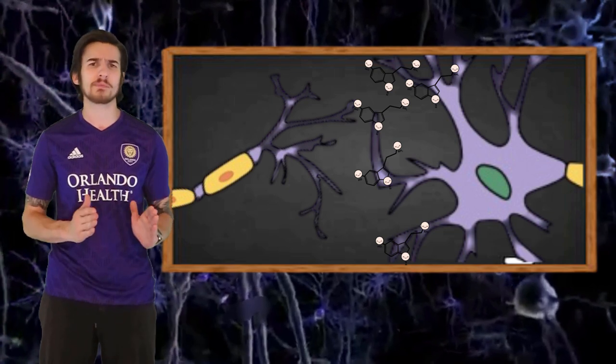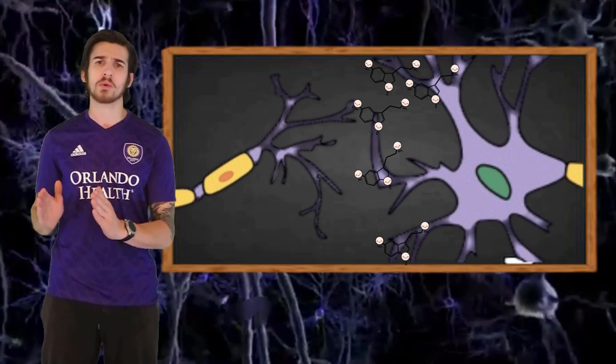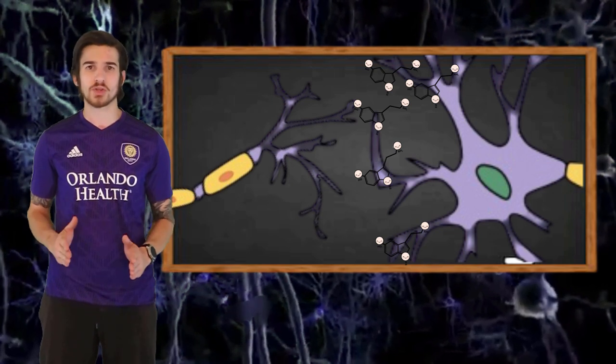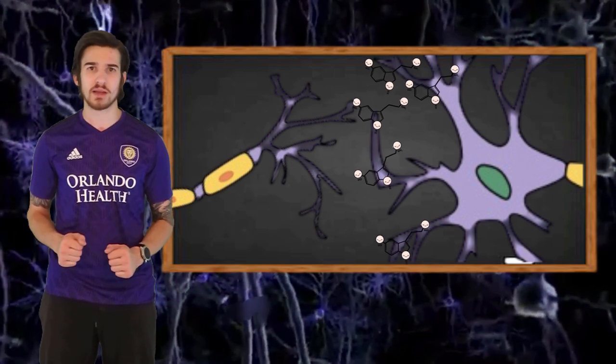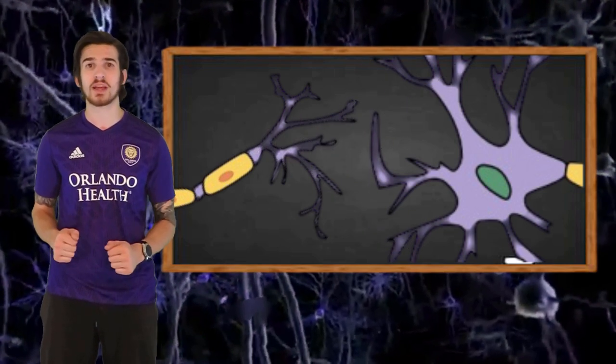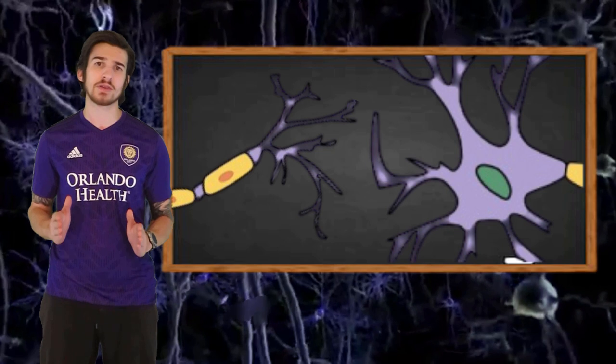Neurotransmitters have the ability to either speed up or slow down brain activity, but we will go more into that in our next video. After the message has been sent, the neurotransmitters detach from their receptor sites. They are then reabsorbed by the pre-synaptic neuron and return to their synaptic vesicles in a process known as reuptake.